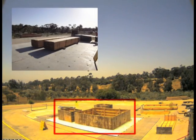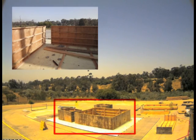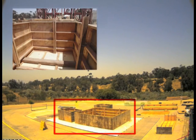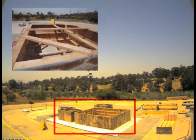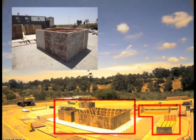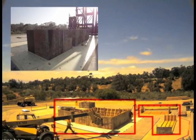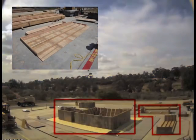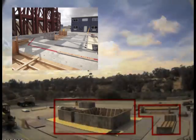Depending on the design of the foundation, the formwork may often require both an interior and exterior segment to support the structural foundation components. In this particular case, the interior formwork segment was installed first. After completion of the interior formwork, the exterior formwork of the foundation is constructed.